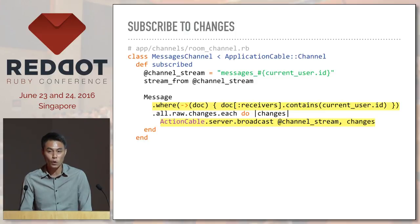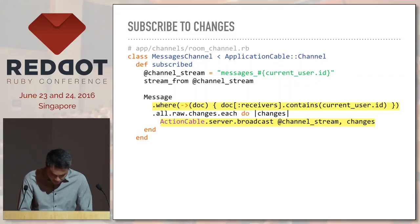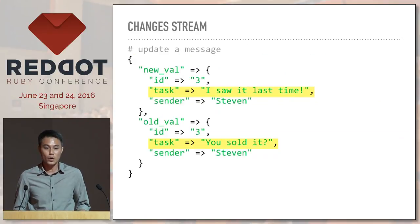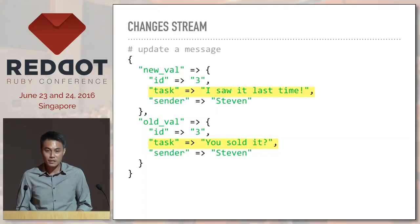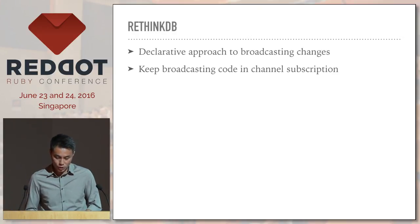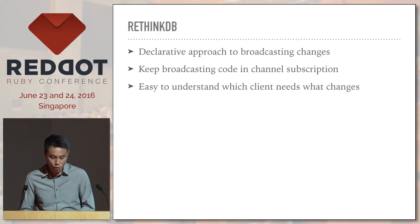Here's a sample in our Action Cable channel. We tell Breeding DB: for any changes in the message table where the receiver has the current user ID, please stream all the changes to me — just broadcast everything. That's a declarative approach: we just say what we need. Breeding DB will stream changes telling us the new value and the old value. Redux takes care of the state change management, passes the new state to React.js, and it renders accordingly. We keep all our broadcasting code inside the channel subscription, making it very tidy and easy to understand which client or user role needs what kind of changes.